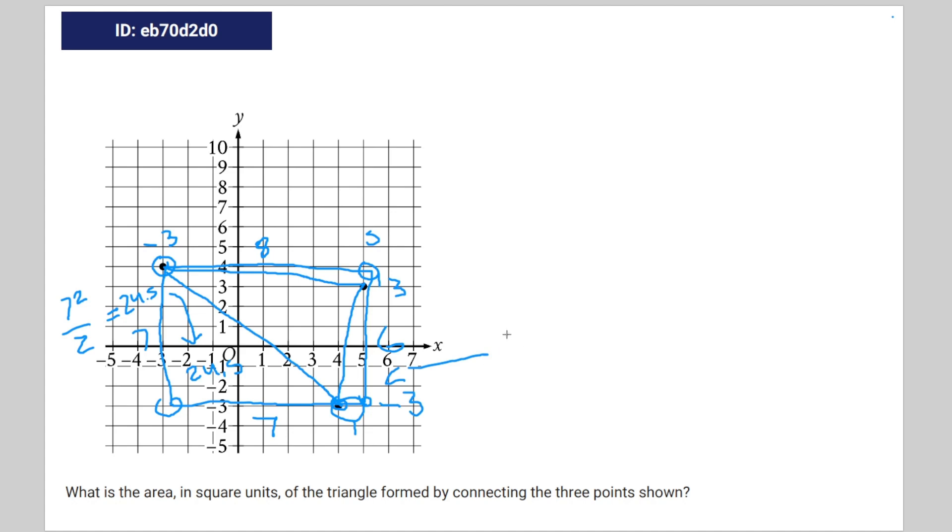This one is going to equal six times one divided by two, which is three. And this one is going to equal eight times one divided by two, which equals four.